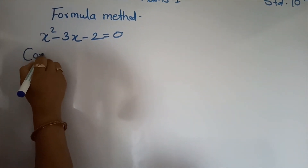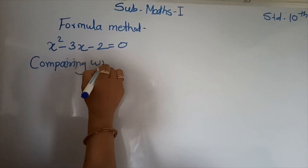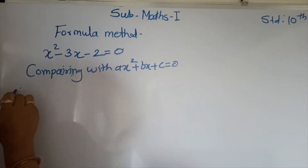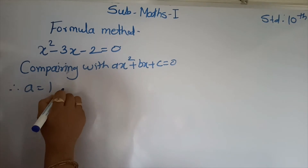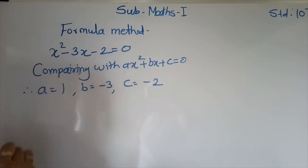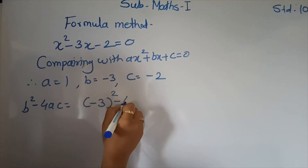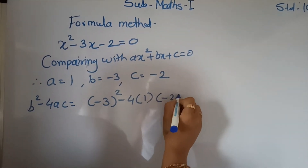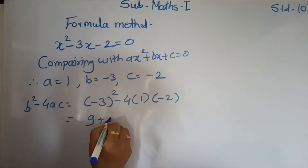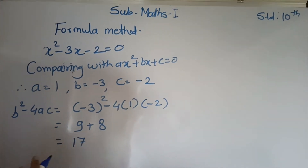First, comparing with ax square plus bx plus c is equal to 0. Therefore, a is equal to 1, b is equal to minus 3, c is equal to minus 2. Then b square minus 4ac is equal to minus 3 square minus 4 into 1 into minus 2. Minus 3 square is 9. Minus times minus gives plus, so plus 4 times 2 is 8. 9 plus 8 is 17. The value of b square minus 4ac is equal to 17.